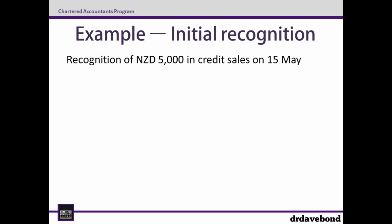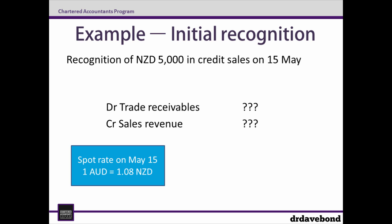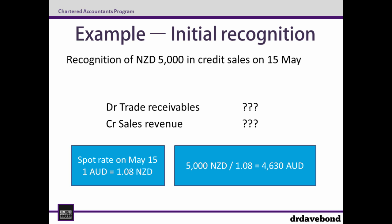In this example we're assuming the functional currency is Australian, so the New Zealand dollars will be the foreign currency. When we look at the initial recognition, it takes place on the 15th of May, and this would be debit trade receivables and credit sales revenue for an unknown Australian amount. Using the spot rate on the 15th of May of 1 Australian dollar equal to 1.08 New Zealand dollars, we end up with 5,000 divided by 1.08, giving us 4,630 Australian dollars. So the amount being recognized in the transaction is 4,630.